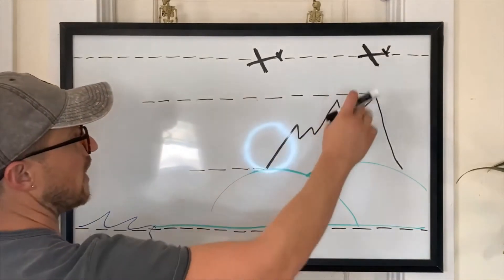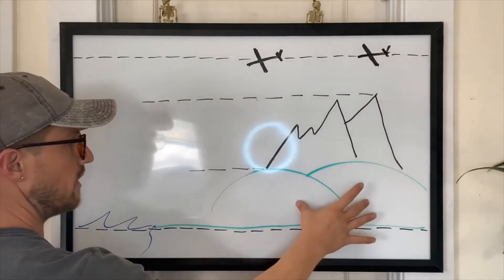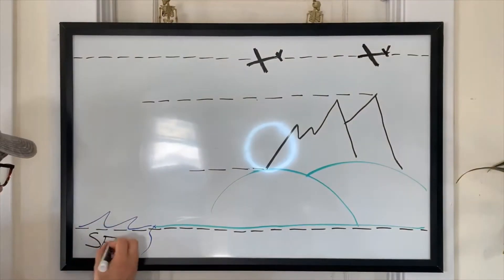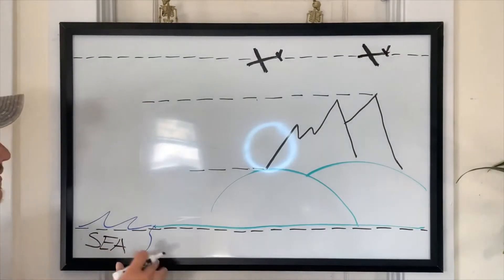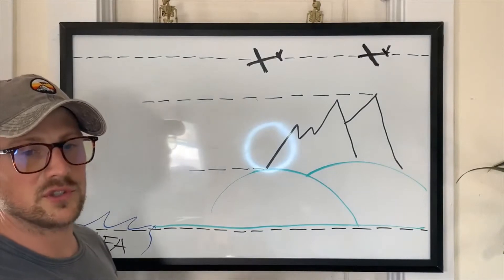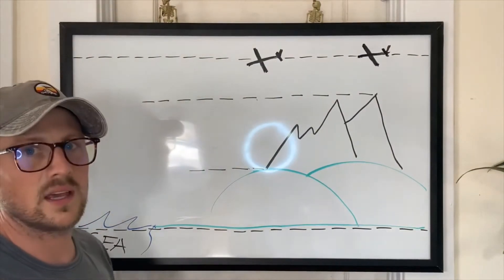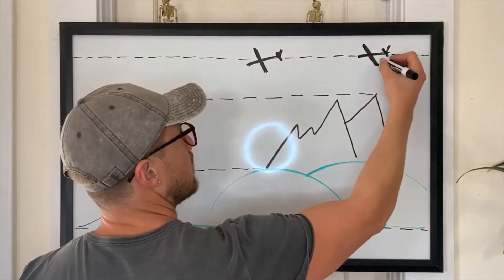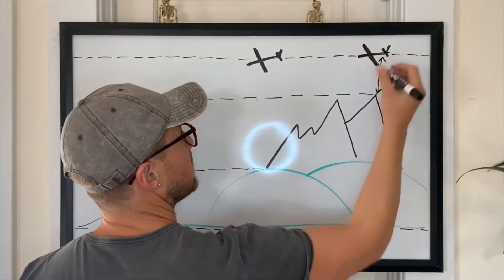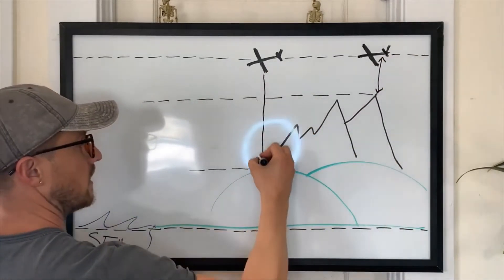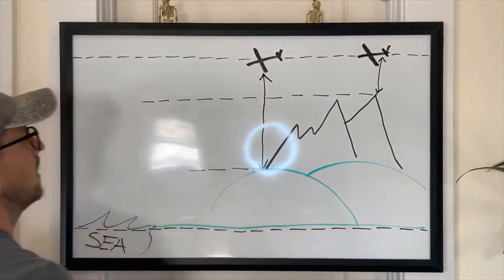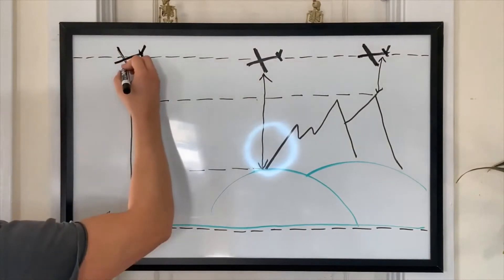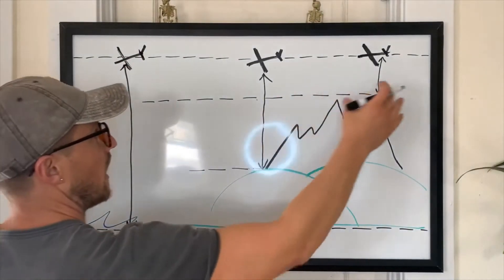So here we have a couple of aircraft. We have a mountain and then we have some hills. We have the ground and we have the sea, so this is going to represent our sea level. The first altitude I want to talk about is absolute altitude, and that's the same thing as saying above ground, or AGL. So above ground or absolute altitude is going to be, for each aircraft, the distance from the aircraft down to the ground directly below it. These are our absolute altitudes.